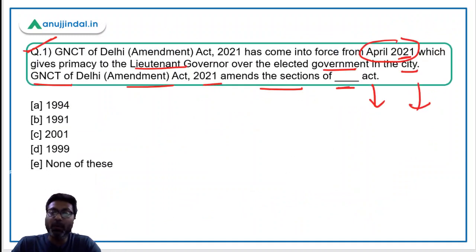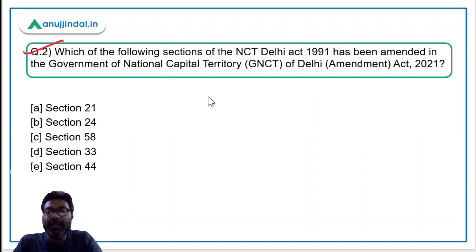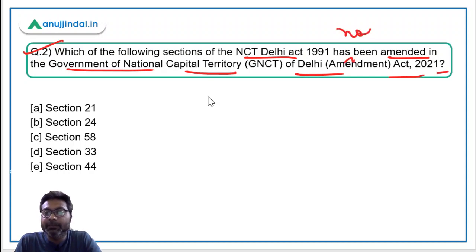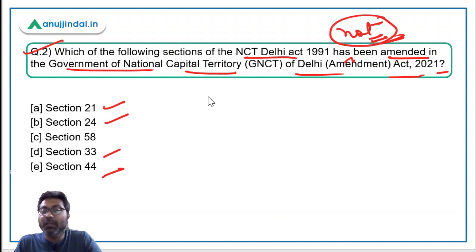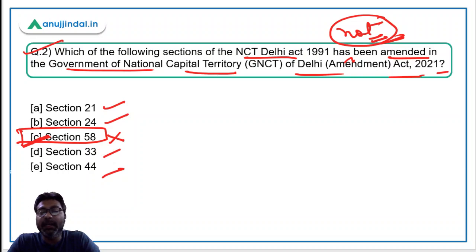Now let's come to question number one: GNCTD Amendment Act 2021 amends the section of which act? This was the 1991 Act that was amended through the GNCTD Amendment Act of 2021. The question asks which of the following sections of the NCT Delhi Act 1991 has NOT been amended. Sections 21, 24, 33 and 44 were amended — not section 58. Therefore, the correct answer is Option C: Section 58 was not amended under the GNCTD Amendment Act of 2021.